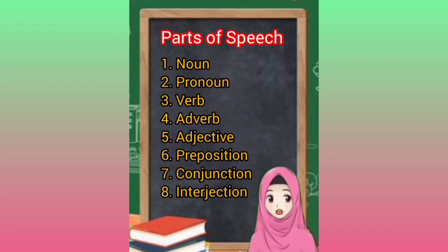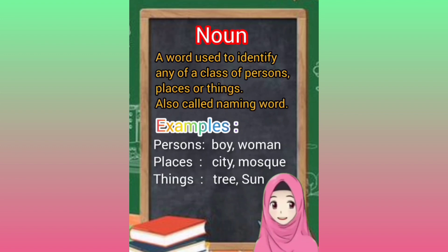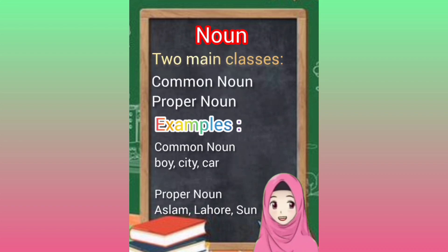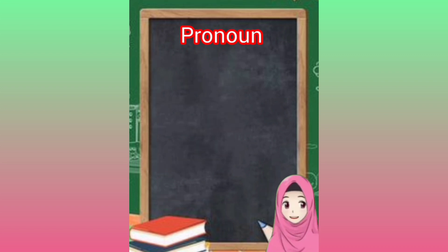Parts of speech: noun, pronoun, verb, adverb, adjective, preposition, conjunction, interjection. A noun is a word used to identify any of a class of persons, places, or things — also called a naming word. Examples: person, boy, woman; place, city, mosque; thing, tree, sun. Main classes: common noun and proper noun. Common noun examples: boy, city, car. Proper noun examples: Aslam, Lahore, Sun.